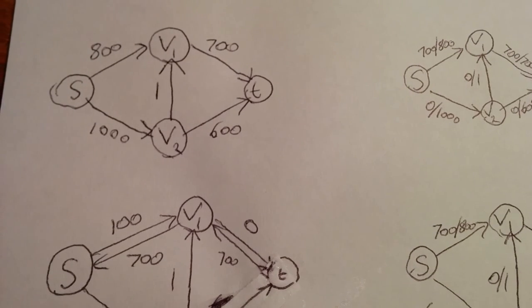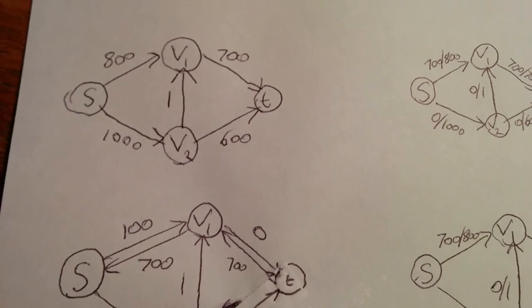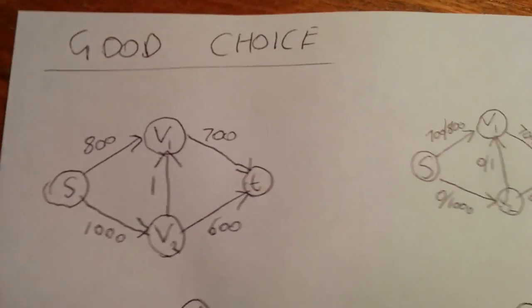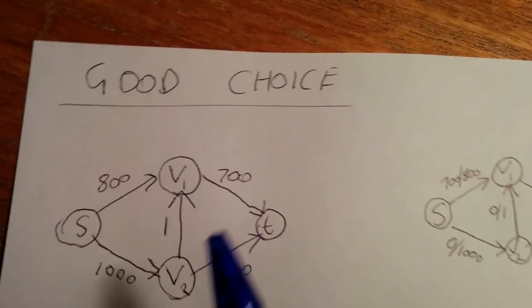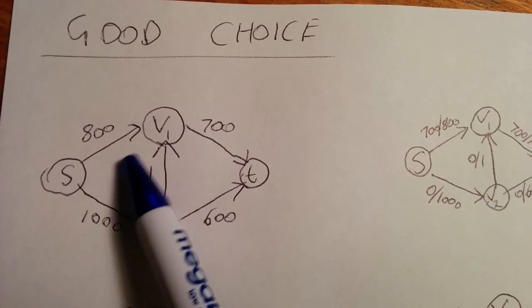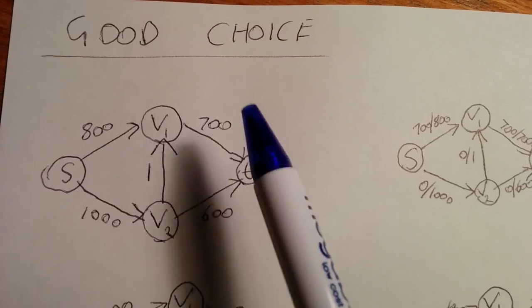Basically, the running time of the algorithm really depends on how we choose our augmenting paths. So here, I've given a good choice of how we choose our augmenting paths. So we start off with this graph, and as you can see, we have vertices with value 800, 700, 1,600.